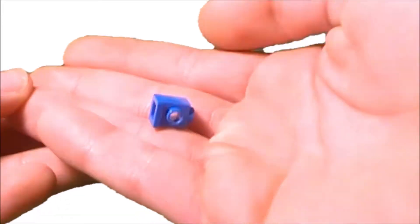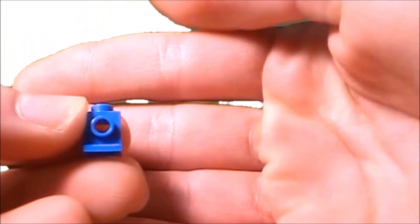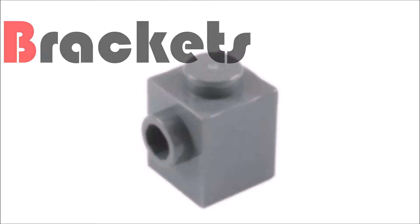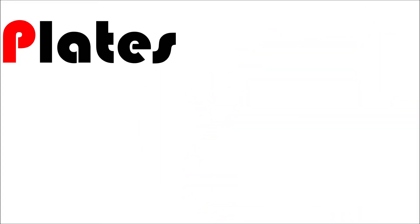LEGO has made several pieces just for building like this, as they use it in their sets too. The first class is brackets. Here we have the headlight brick, the travis brick, and this brick. Some are thinner, like this modified 1x2 plate, or this one.